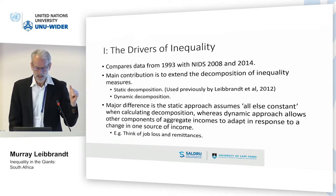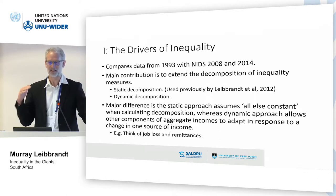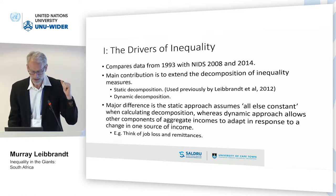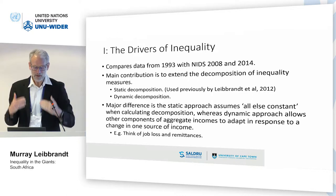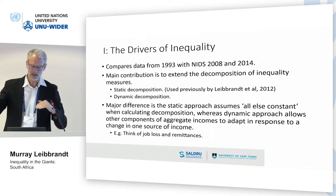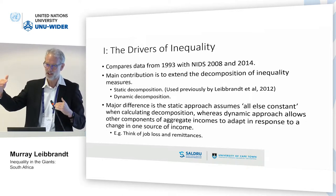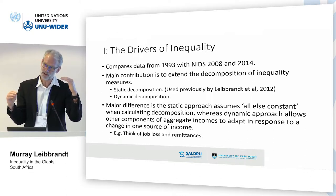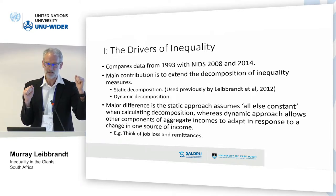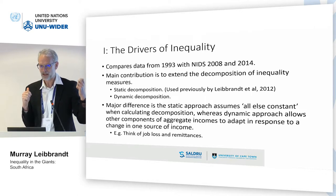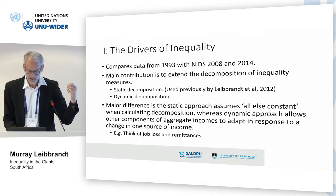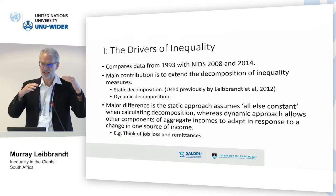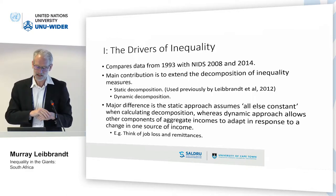We have done many decomposition exercises in South Africa — decomposed everything in sight: between and within race group, between and within rural areas, et cetera. We redid the static decomposition exercises, taking the story up to 2014, just to make sure we were getting the same story. And it is the same story in a static sense: the dominance of wage income in driving the household per capita income earnings distribution. But the static decomposition hides quite a lot.